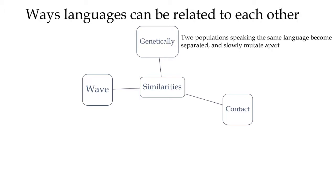Maybe the best example of this is Iceland, where the Vikings moved to Iceland — they were originally from Norway and Denmark — and over the many centuries where the Icelanders didn't have contact with the outside world, small changes happened. Today Icelandic is very different from the languages spoken in Norway and Denmark, although they can all kind of understand each other.